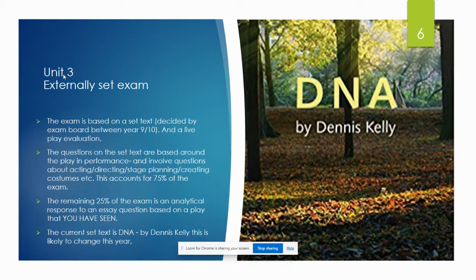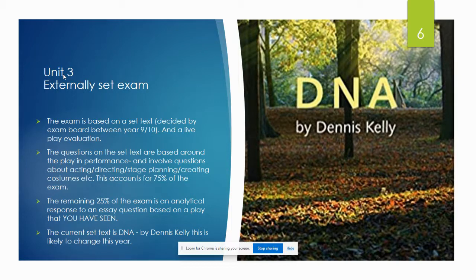Unit 3 is an externally set written exam lasting one hour and thirty minutes. 75% of this exam is based upon a set text — our current text being DNA. The remaining 25% is based upon an evaluation of a live play that the students have seen. This unit is also worth 40% of the final GCSE.